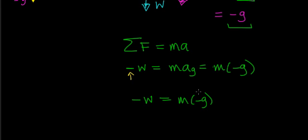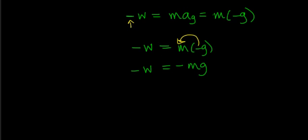We can take this negative sign and pull it out to the front. When we do that, you get minus weight equals minus mg. You can then cancel out both of those negative signs — this sign cancels with that sign — and what you get is weight equals the mass of the object times the acceleration due to gravity: W = mg.